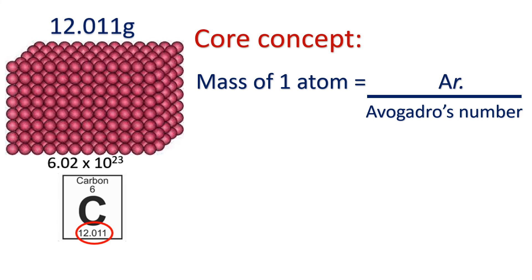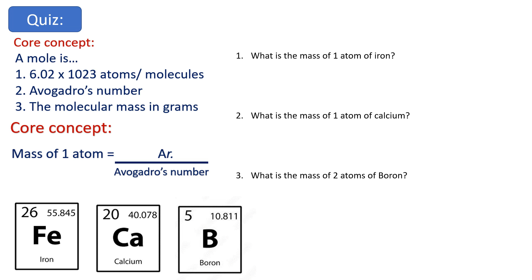The last thing for this video, the last bit of the core concept for today, is the idea then that if I know the mass of 6.02 times 10 to 23 atoms, I can totally figure out the mass of one atom. So I simply take the atomic, the relative atomic mass, which is the Ar, and I divide it by Avogadro's number. Let's give this a go. That's it for today, I'll see you later.